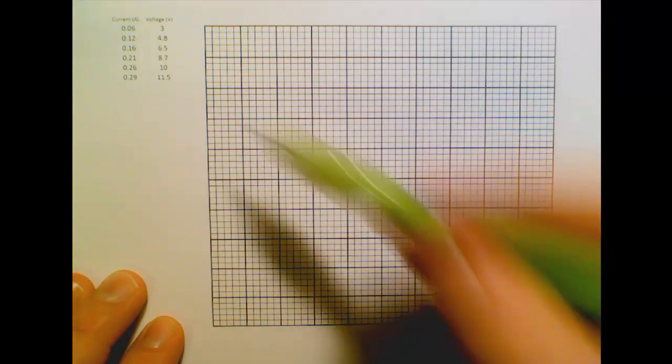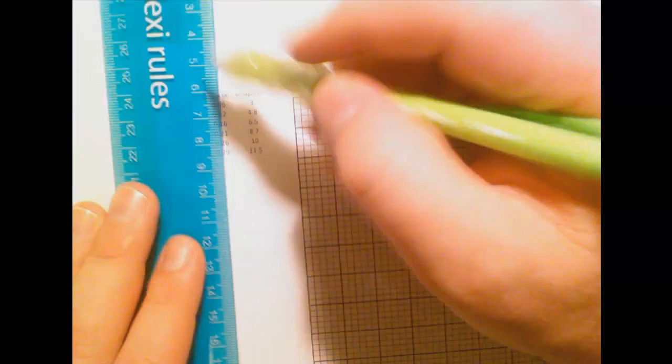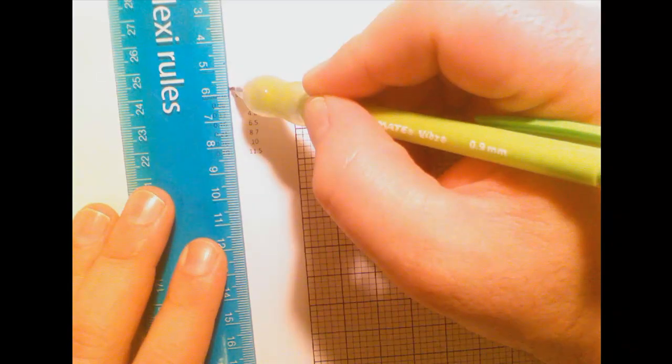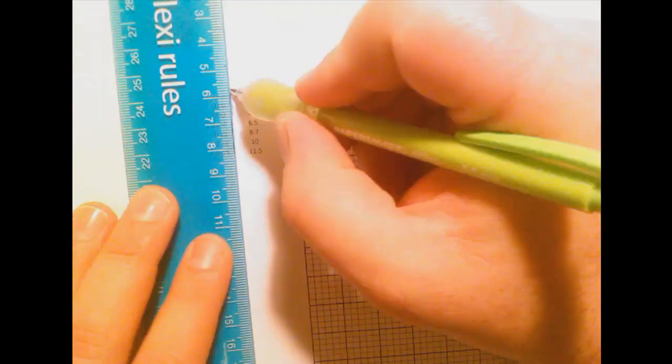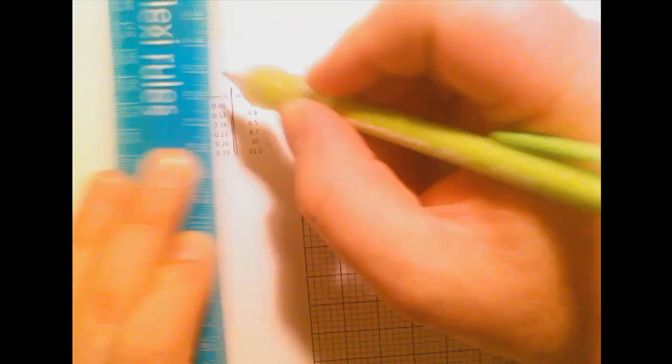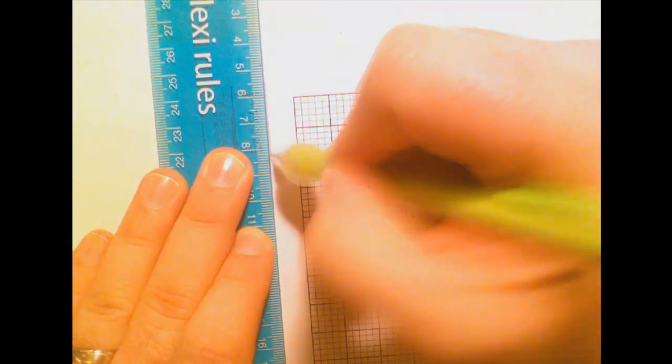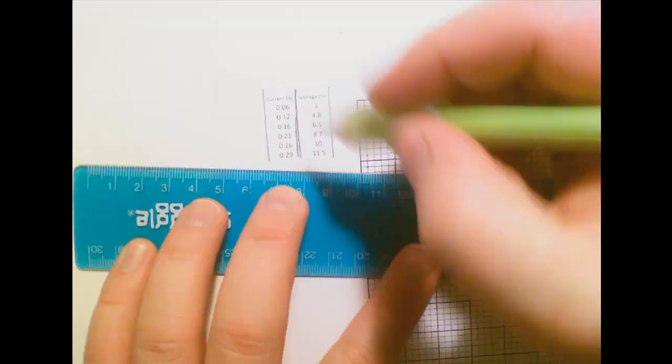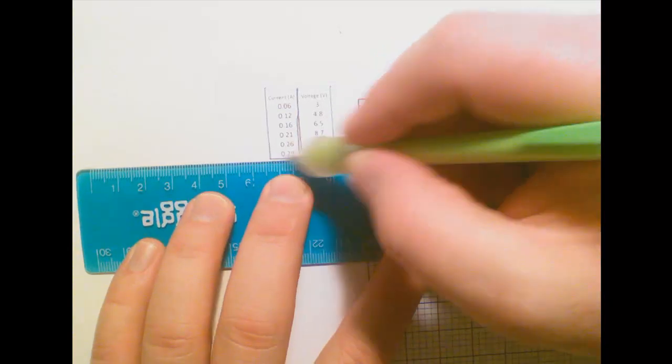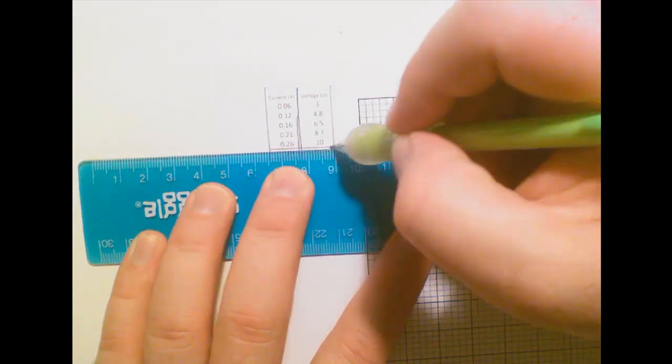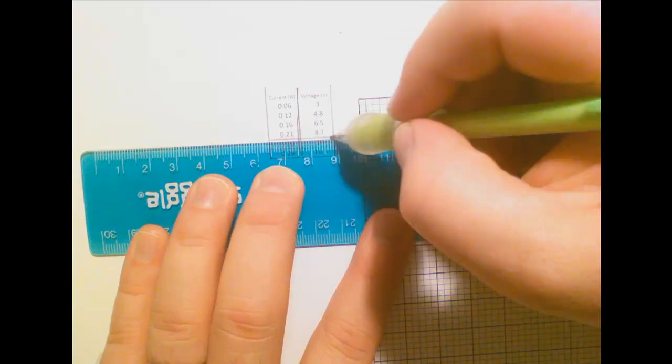And I've got a set of data here, and actually it's not drawn up in a very good way because it's not actually in a table. So I'll just quickly add some lines here because all tables should have lines around them. It's got a bit messy already. Anyway, so what I'm going to do is plot this data.